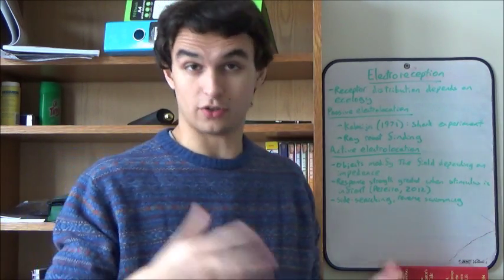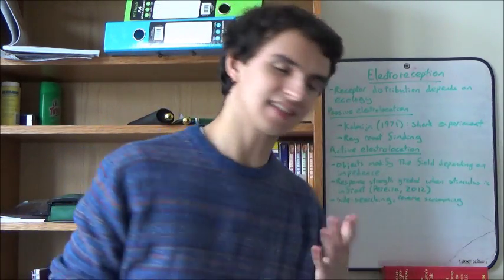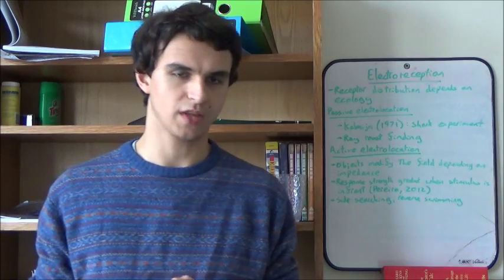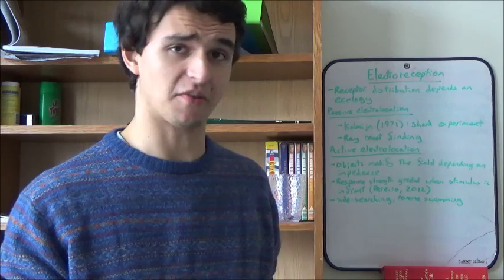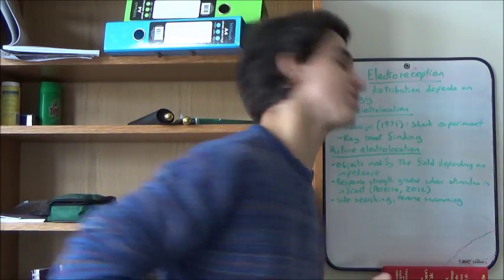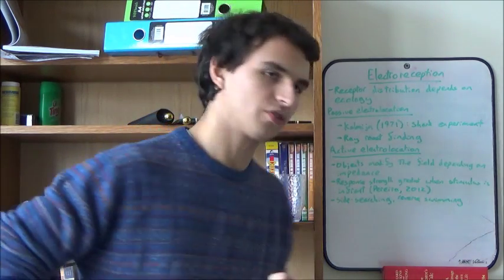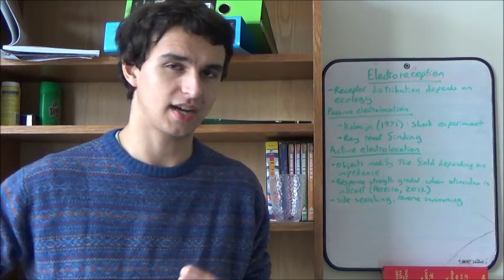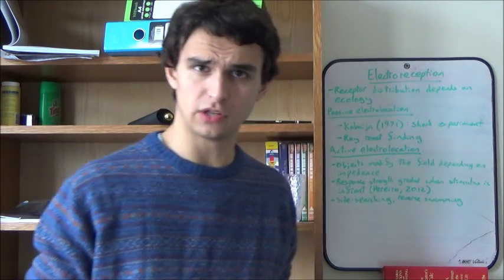Most electroreceptors are for detecting objects—electrolocation. There's passive and active electrolocation. Let's look at passive first. A brilliant, classic experiment which demonstrated this was done by Kalmijn in 1971 on cat sharks.